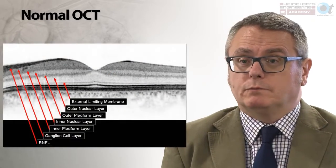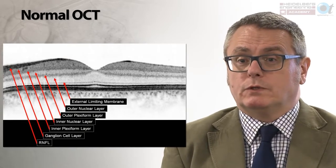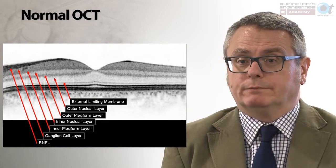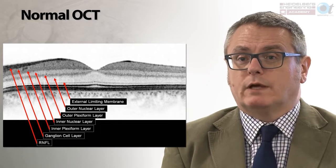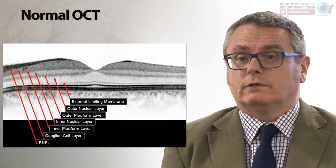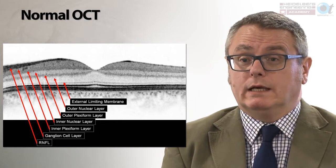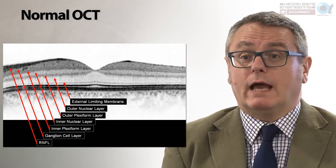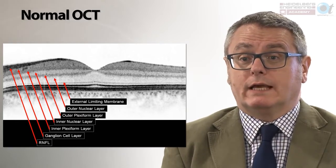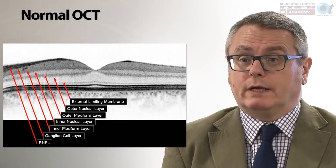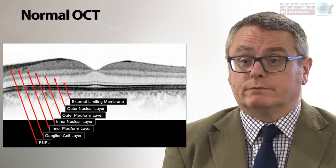There is good correlation between all OCT devices for inner retinal structure. Going from the retinal nerve fibre layer through ganglion cell layer, inner plexiform, inner nuclear layer, outer plexiform, outer nuclear layer, and finally the external limiting membrane, which represents the apical aspect of the Müller cells.